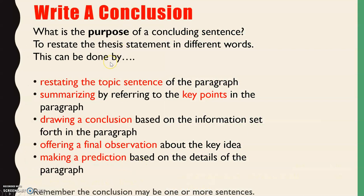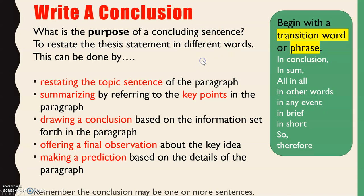The purpose of the concluding sentence is to restate the thesis, argument, or claim. We can restate the topic sentence in different words, summarize and refer to the key points in the paragraph, draw a conclusion based on all the information, or offer another idea that sums up, illustrates, or even makes a prediction. Remember, the conclusion can be more than one sentence — sometimes it can be two. We also want to introduce our conclusion with a transition word or phrase.